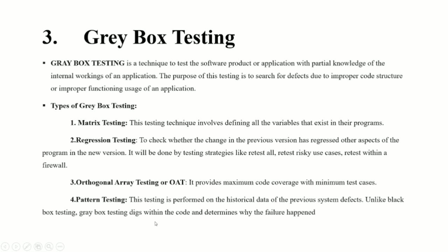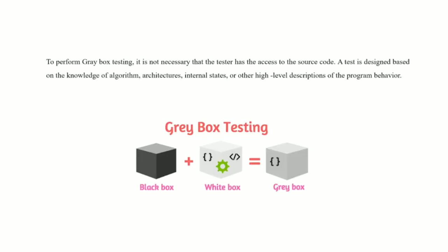Pattern testing is performed on the historical data of the previous system defects. Unlike black box testing, gray box testing digs within the code and determines why the failure happens. To perform gray box testing, it is not necessary that the tester has access to the source code. A test is designed based on the knowledge of algorithm, architectures, internal states, or high-level descriptions of the program behavior. This is the block diagram of gray box testing.